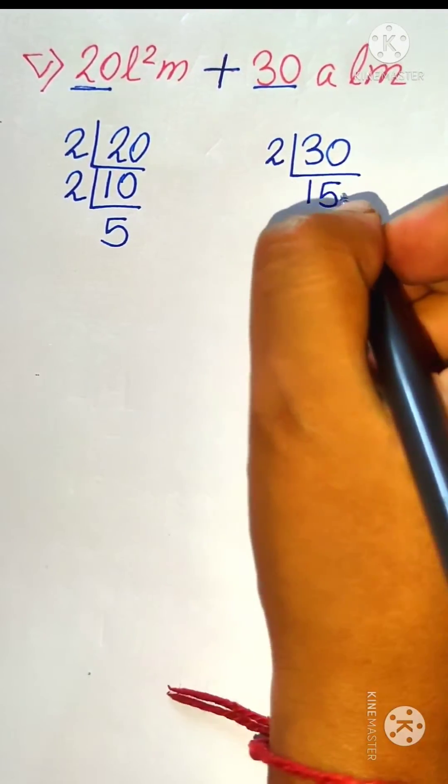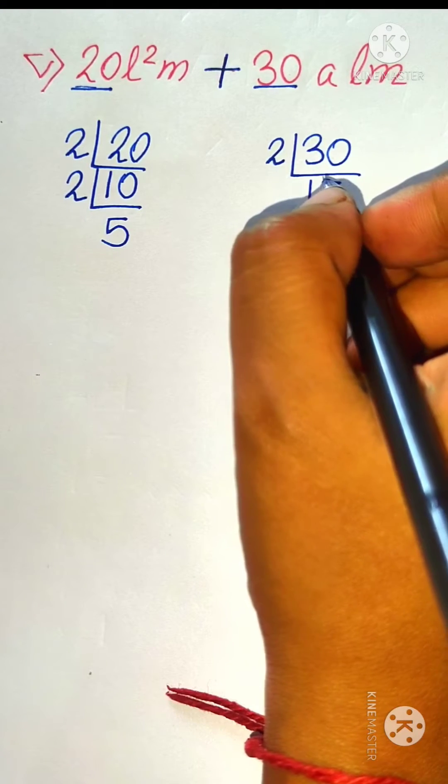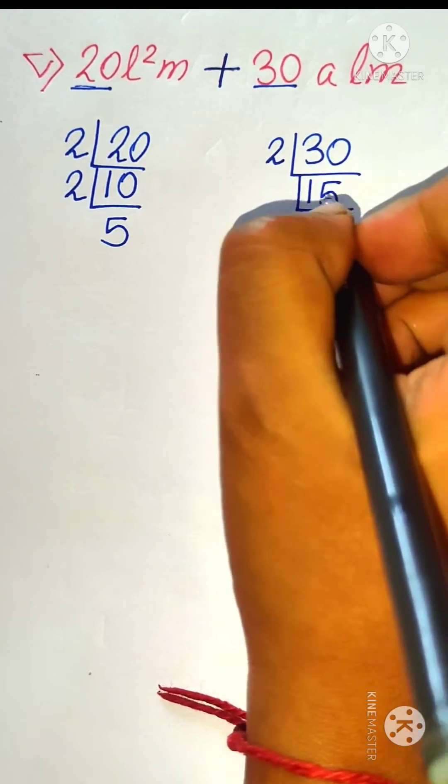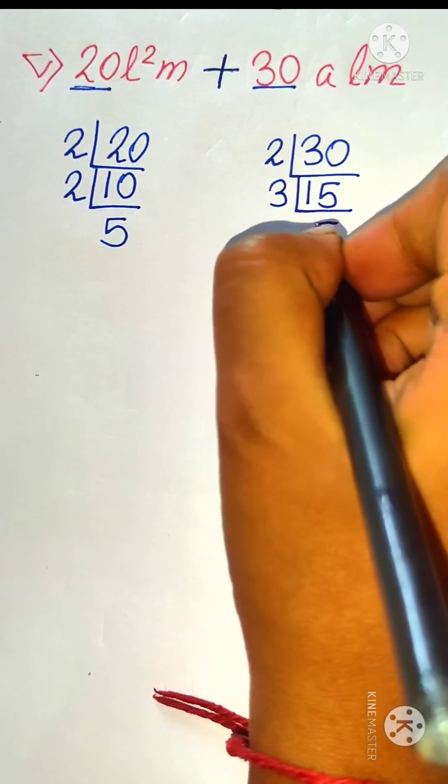Here, 30 is divisible by 2, so 15 times 2 is 30. 15 is not at all divisible by 2 now as it is an odd number. So let us see whether it is divisible by the next prime number 3 or not.